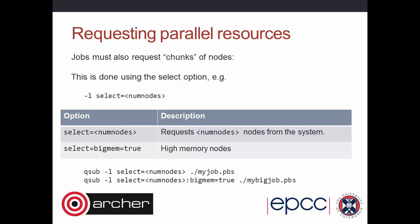On Archer, when you request parallel resources you request them in numbers of nodes, not processors. Remember there are 24 processor cores per node. The minimum allocation quantum is a node — you get exclusive access. It wouldn't make sense to request 36 cores; that would have to round up to two nodes. So you use '-l select=<num_nodes>' to request the number of nodes. For example, 'qsub -l select=<num_nodes> myjob' — you might run on 1, 10, or 100 nodes.